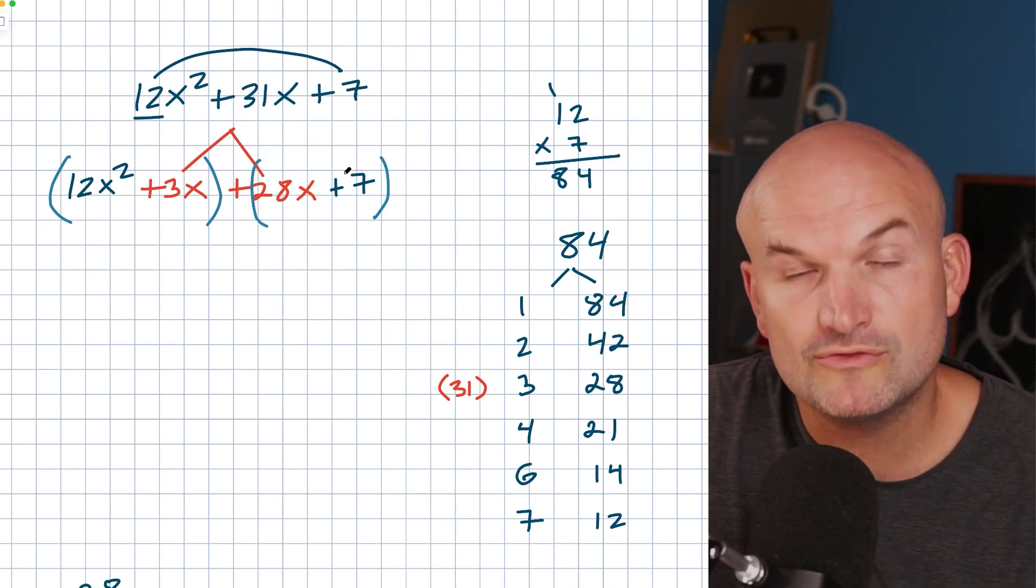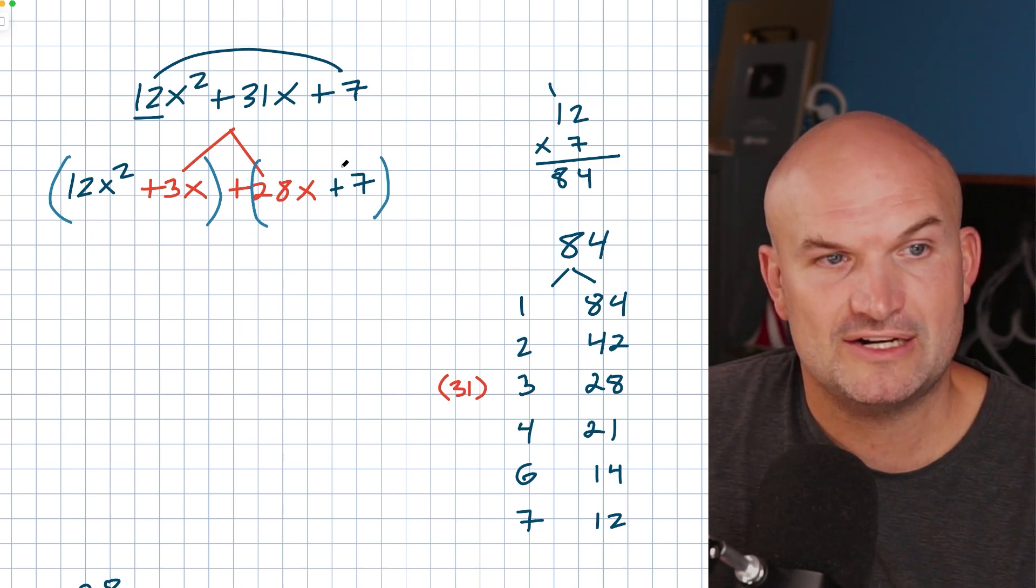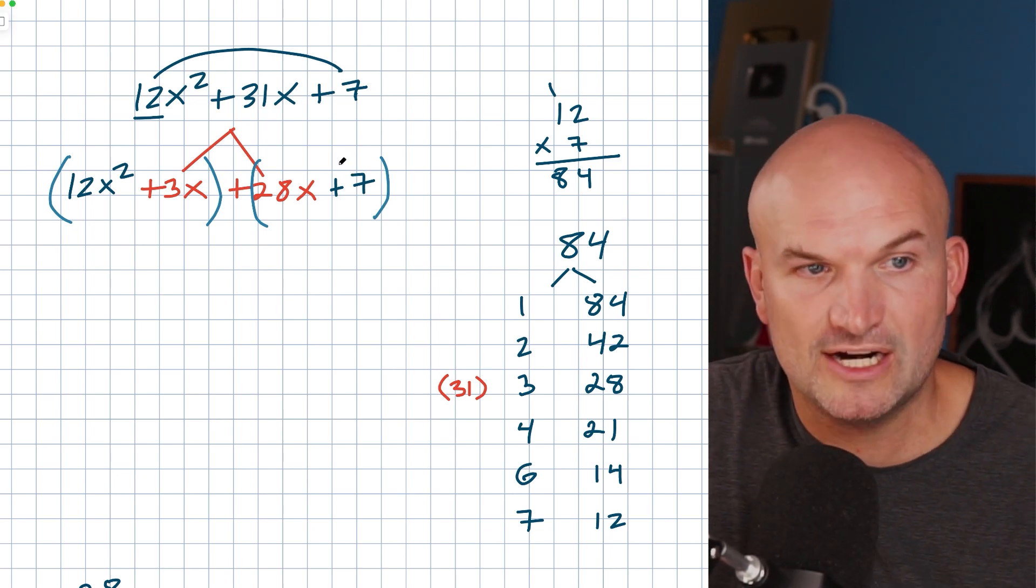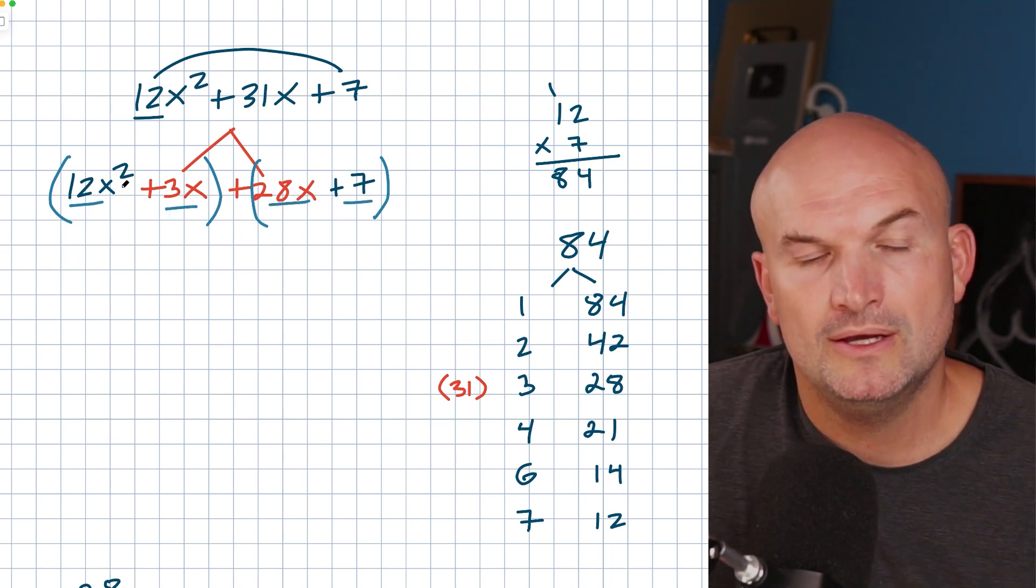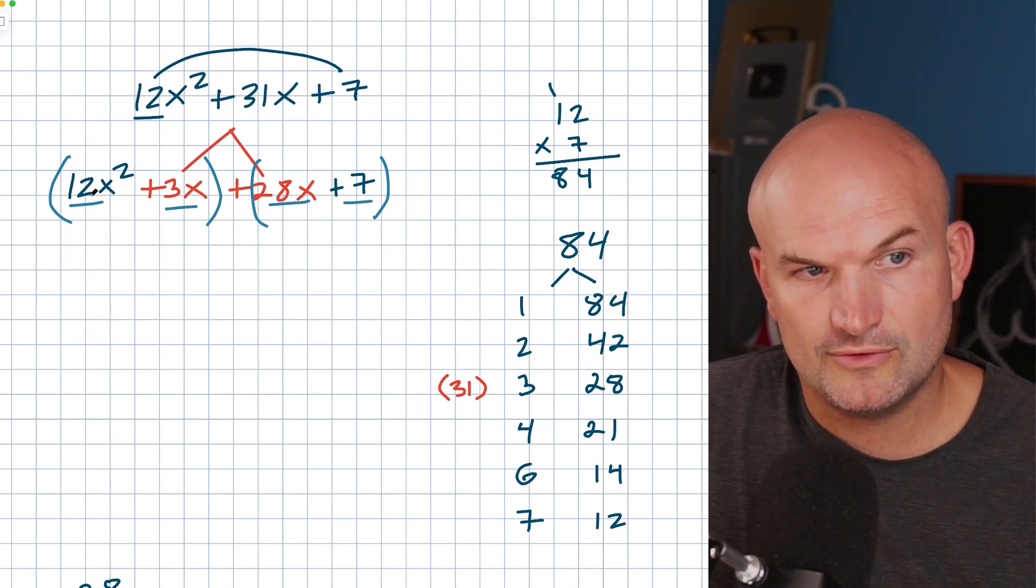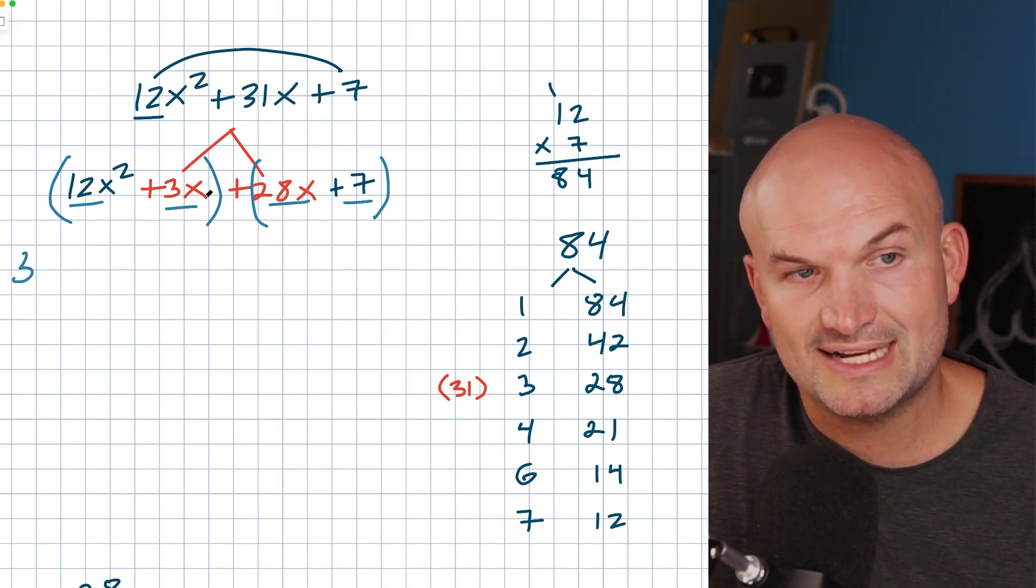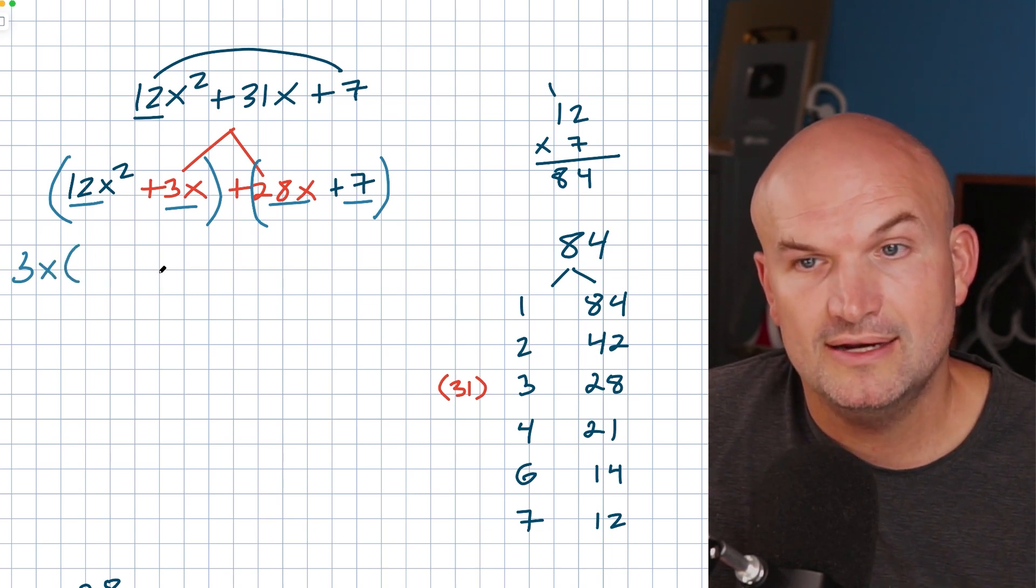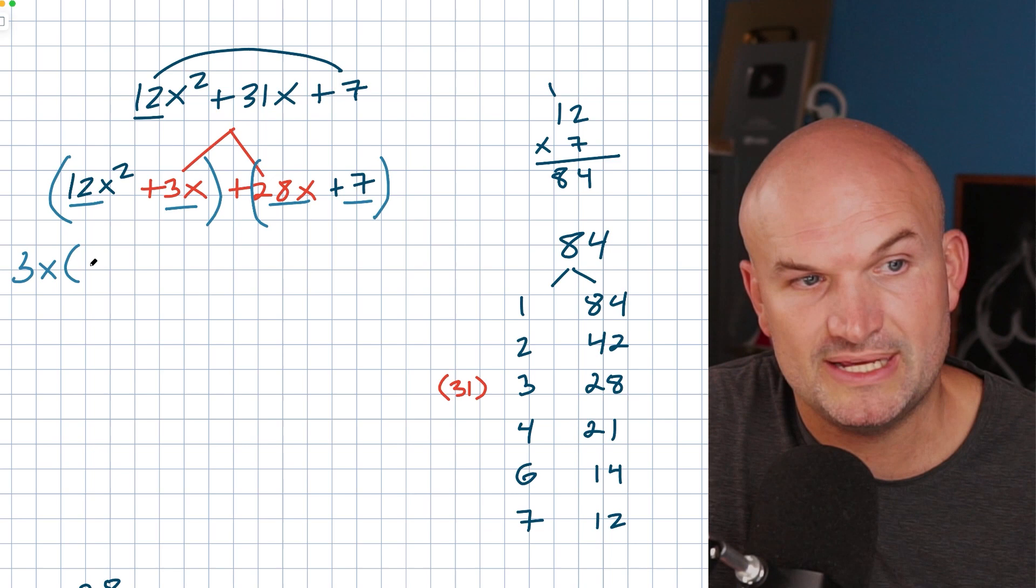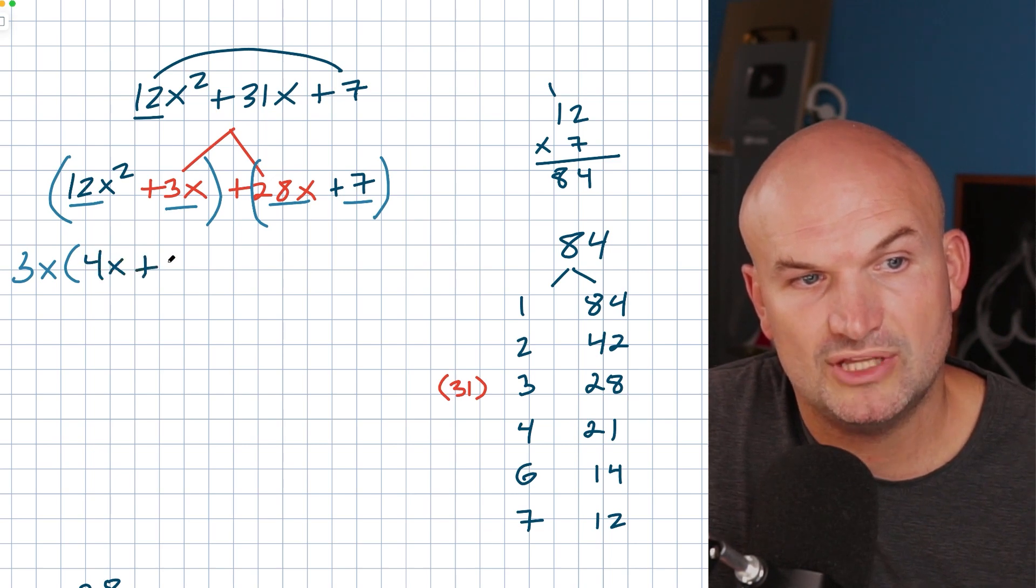But what we need to do is we need to take this expression and rewrite it as a product. So to do that, we're going to do what we call the grouping method. So I'm going to group my first two terms and I'm going to group my last two terms. Now, all we're simply going to do is look for the GCF, the greatest common factor. What is the largest number and variable that evenly divides into both of our terms for each binomial? So you look in here and you say, all right, three divides into 12 and three divides into three, right? So I got that. And then you could say, I can divide one x into both of these as well. So therefore that's going to be 3x. Now left over inside my parentheses is going to be 4x plus 1.